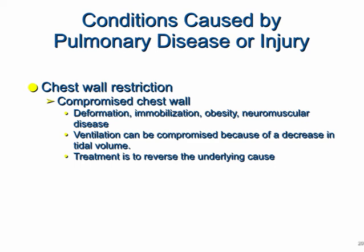Chest wall restriction is fairly common. Even obese patients experience impeded chest wall expansion, which affects oxygenation and gas exchange. Kyphosis in the older adult — usually related to osteoporosis and change in curvature of the upper thoracic spine — also prevents great lung expansion. Scoliosis, if severe, can affect lung expansion as well. Neuromuscular diseases like ALS can obviously affect chest wall expansion, and ventilation can be compromised due to decreased tidal volume. Treatment is to reverse the underlying cause or try to prevent conditions like kyphosis or scoliosis.